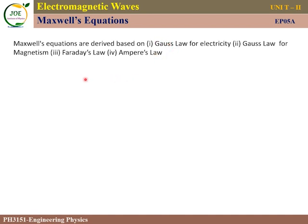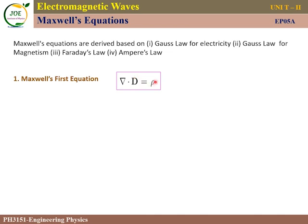Maxwell's first equation is del dot D vector equals rho, where D is the displacement vector and rho is the charge density. In this video lecture we will derive Maxwell's first and second equations.